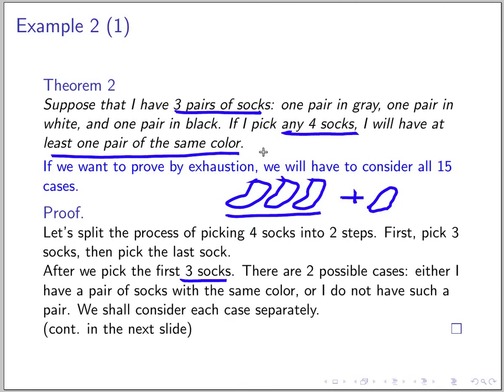To prove this, I'll split the process of picking four socks into two steps. First, I pick three socks, and then I pick the last one. In this theorem, I have two cases. If you look at the first three socks, there are two possible cases: either I have a pair of socks with the same color, or I do not. So it forms two possible cases that we have to analyze.